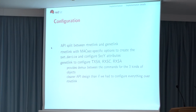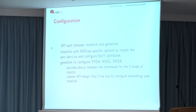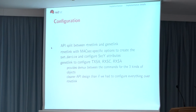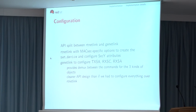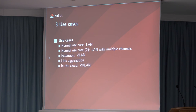The configuration API for MACsec is split between RTNetLink for creating the MACsec net device and configuring parameters global to the net device and security entity, and Generic Netlink to configure all transmit secure associations and receive secure channels. Generic Netlink provides nice demultiplexing between commands for different kinds of objects, which RTNetLink doesn't provide, allowing a nicer API design.